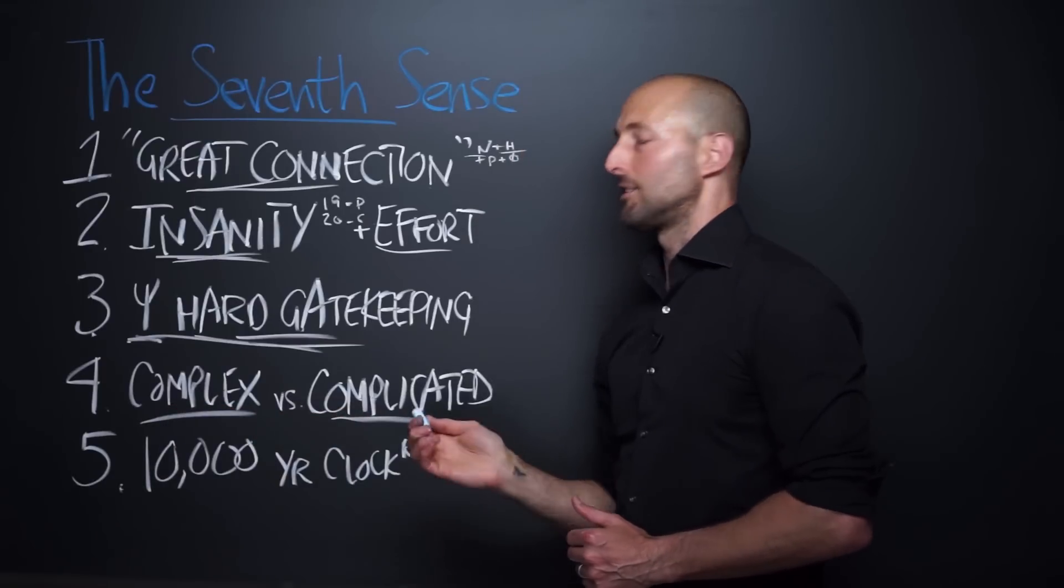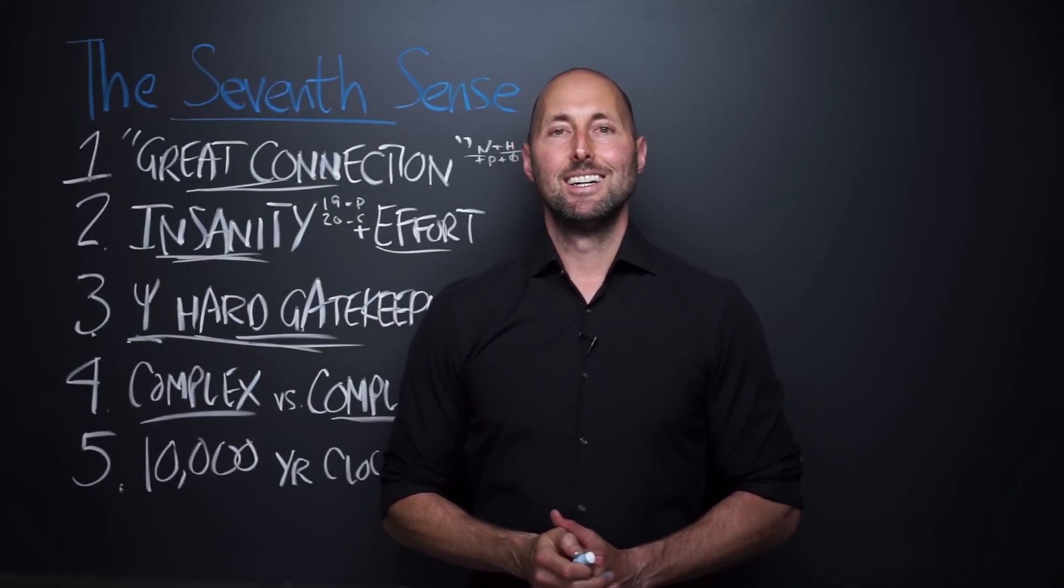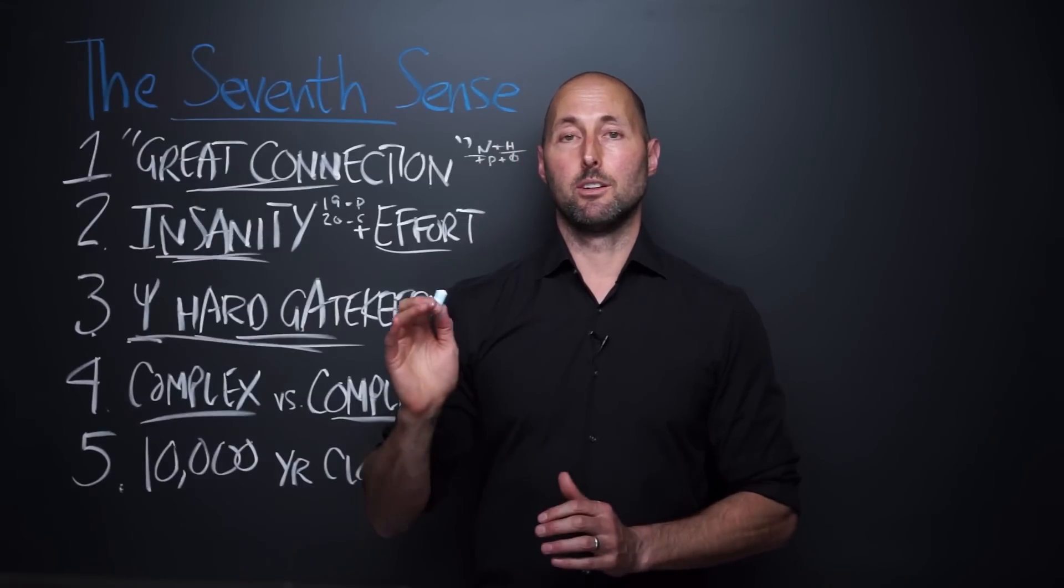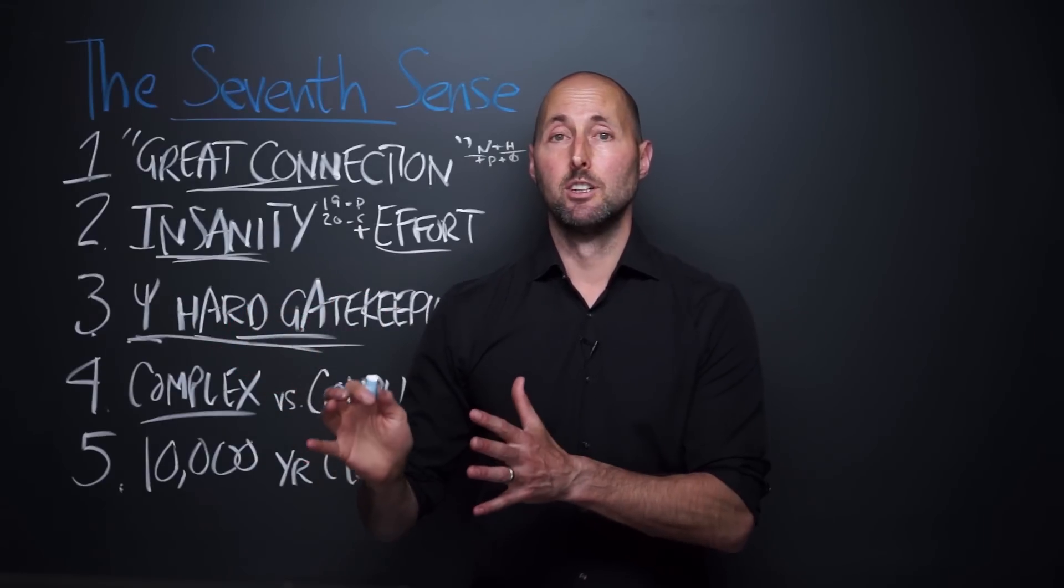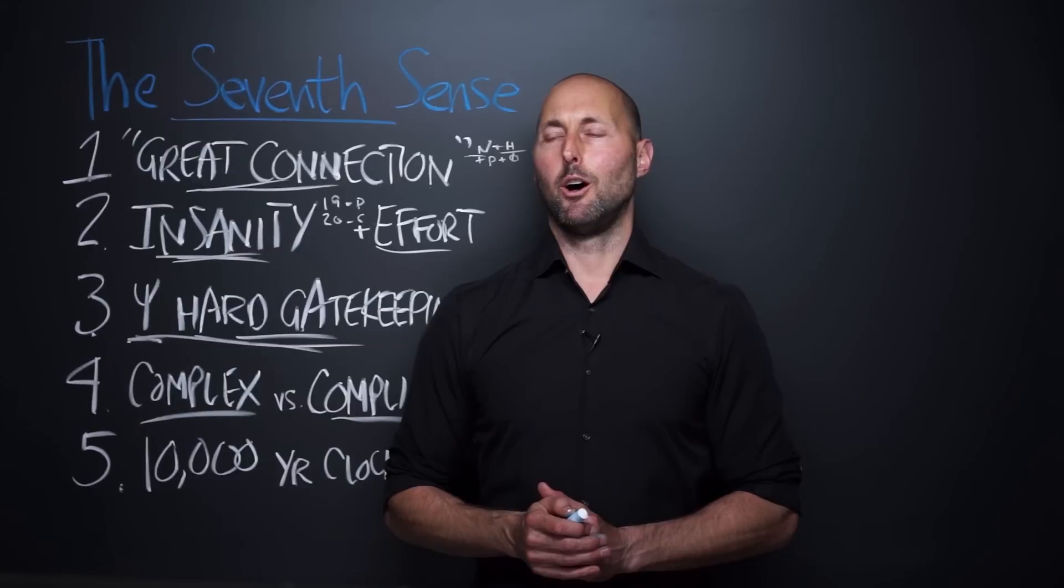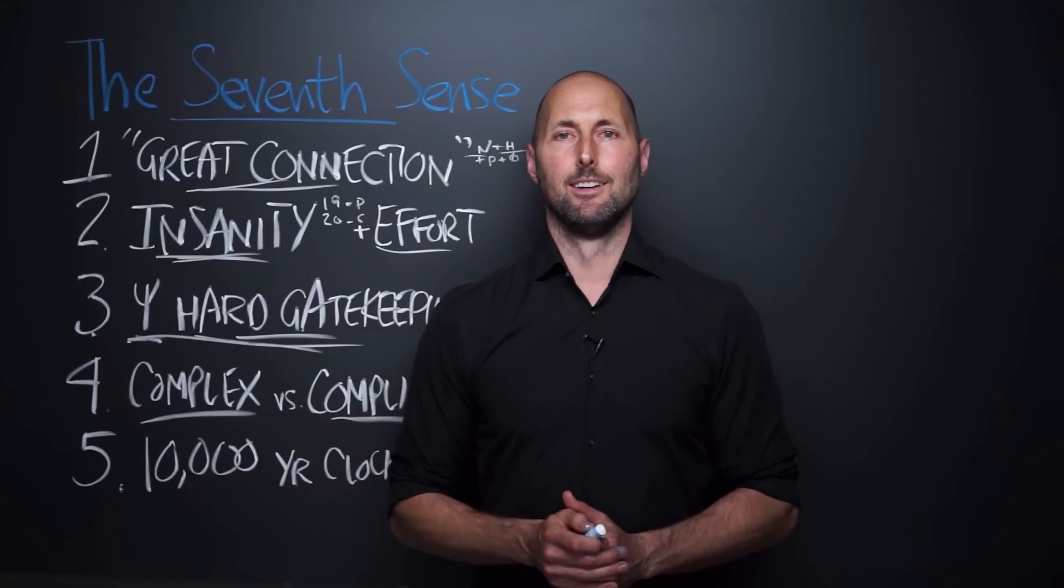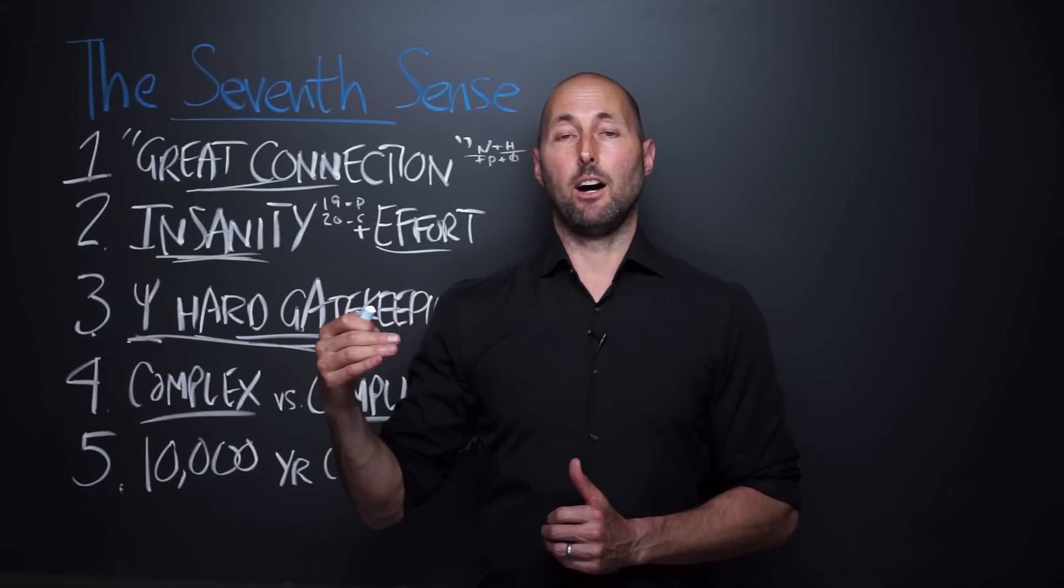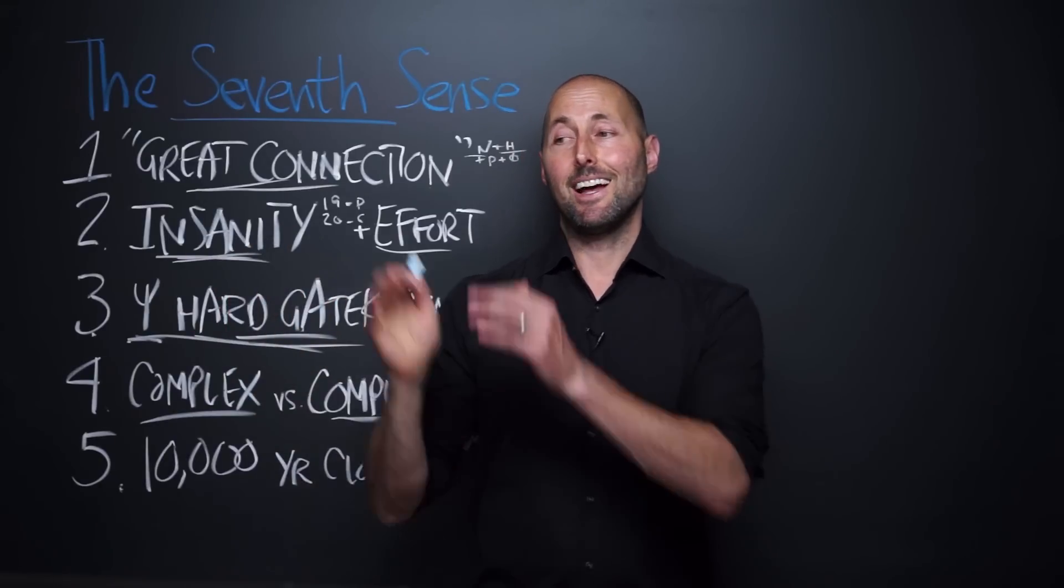Fourth big idea is complex versus complicated. Really cool idea. He says there's a big difference between complicated and complex, and we need to make the distinction. Too often, we think that politics or economics or our lives are complicated. Complicated things, it's like a jet engine, or an artificial heart. It's very complicated. Your calculator is complicated. But you know what? Even if there are a billion pieces in there, you can figure it out. You can systematically figure it out, it's complicated, but you can figure it out, and then you can reliably reproduce it and predict outcomes. That's complicated.